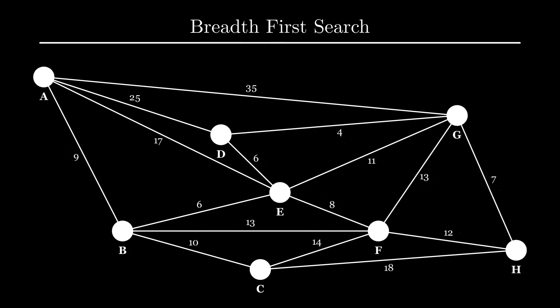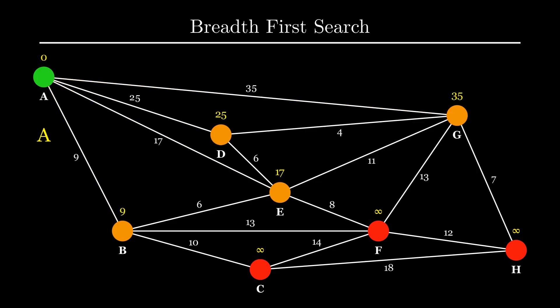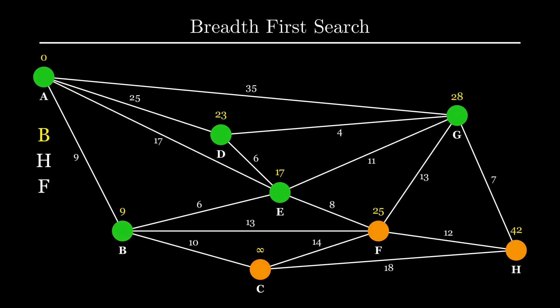Now we get on to the main problem. This time the weights no longer all have a value of one. We again initialize everything with an infinite value, set A to zero, put distances in a queue, and keep going until we reach H — giving a distance of 42. Except it hasn't worked, because we can clearly see that going A → B → F → H gives a shorter path. So there's something wrong with our algorithm and we need to tweak it.